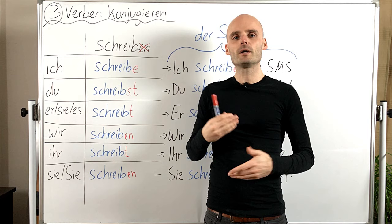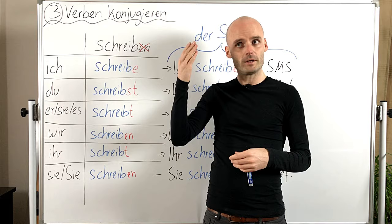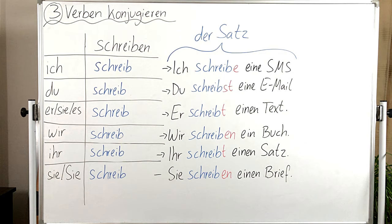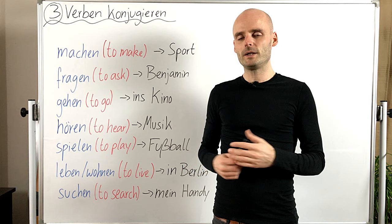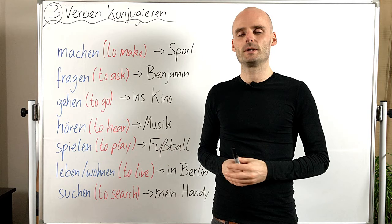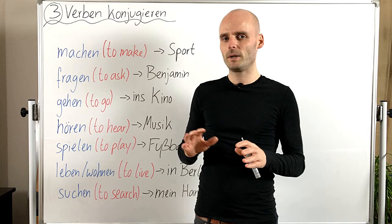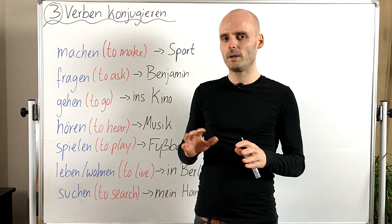Now we're going to take a look at some more verbs so that you have some verbs to play with and conjugate. You now know how to conjugate regular verbs in German. There are also, of course, irregular verbs like in any language, and we're going to take a look at those in lesson 5. It's not so different, so basically you know more or less everything you need to know about conjugation.